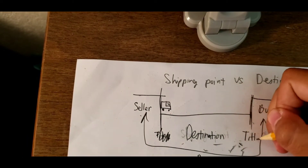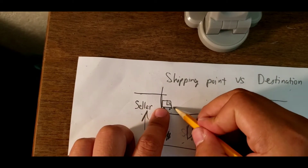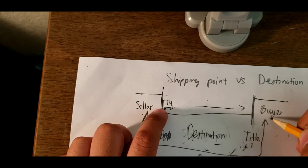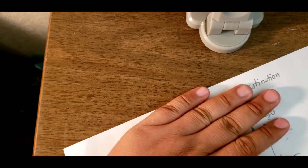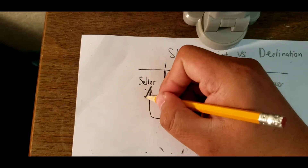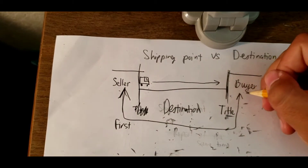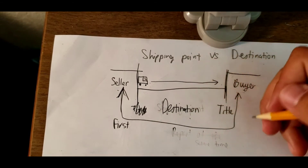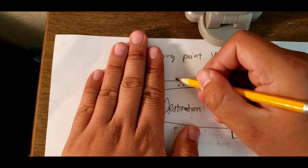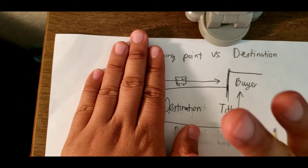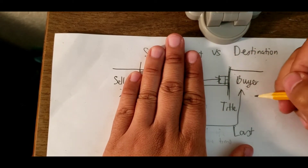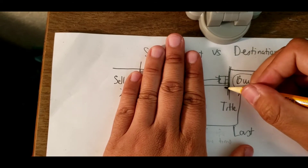But if they use final destination, the title is not passed here — the title should be passed here at the buyer's point. So the title for the buyer will come here. If they use destination, the seller reports first, and the buyer will not report until the truck comes here — the last point. The truck is still in transit, so the buyer cannot report about this product until the truck reaches the final location.